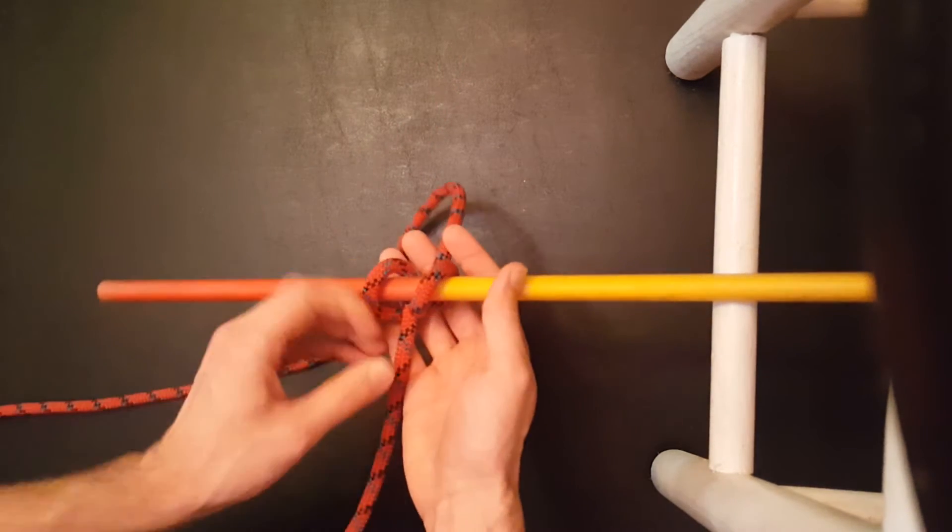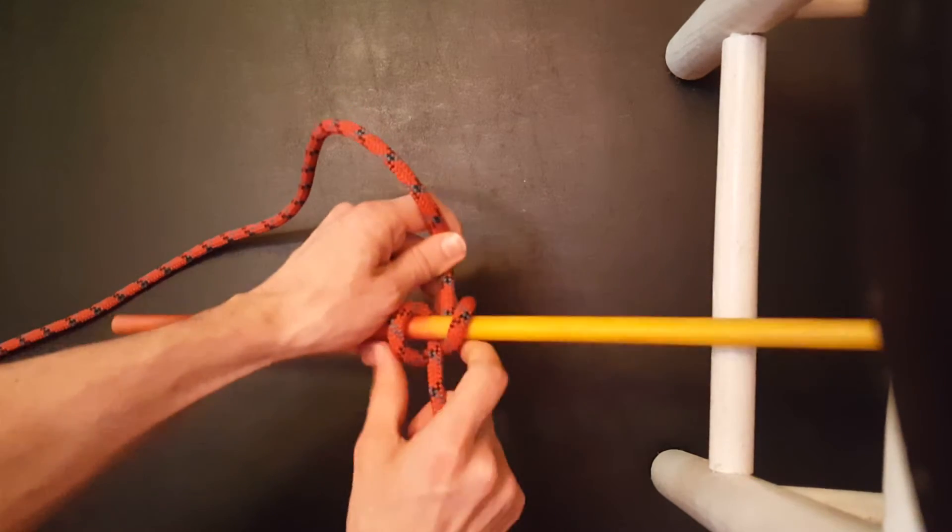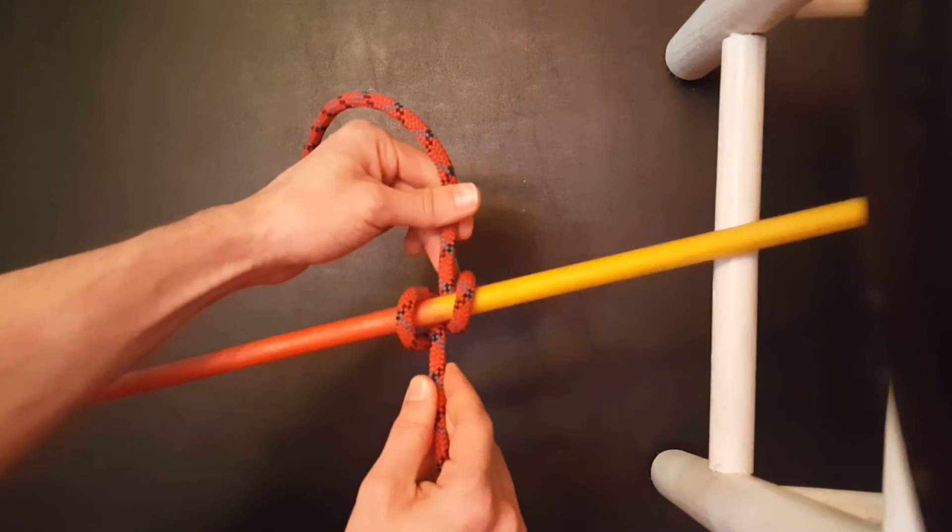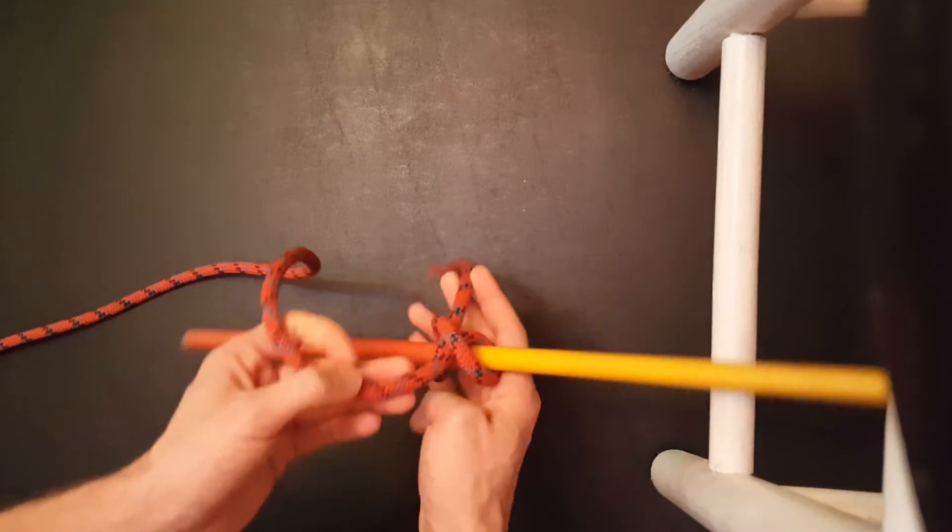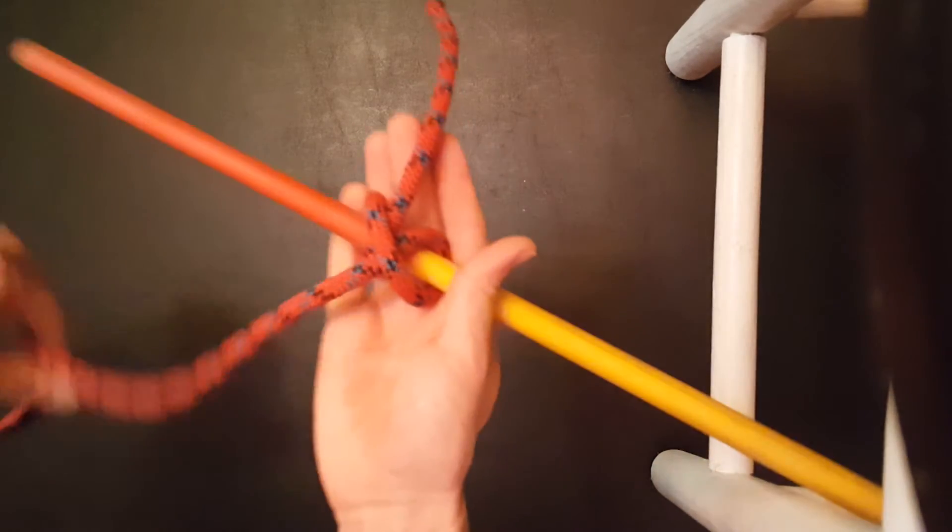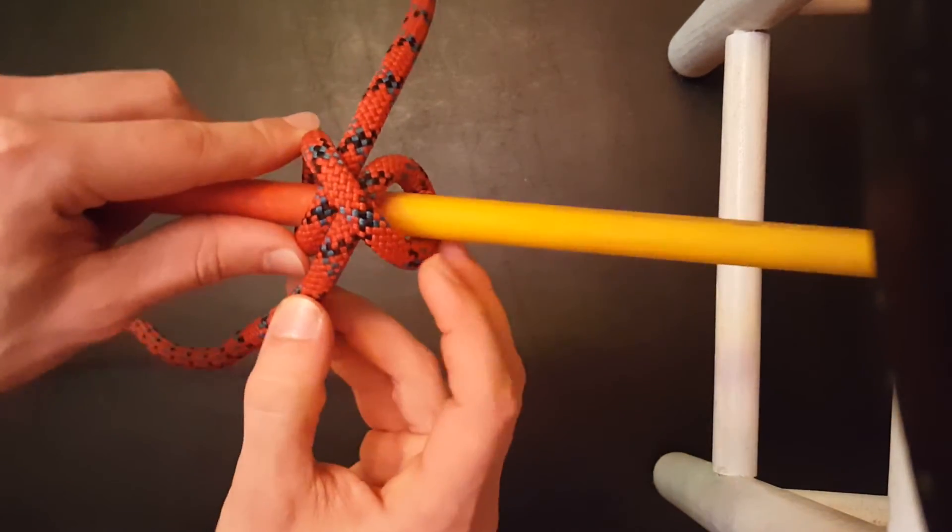Here's what it looks like from the other side. Kind of hard to see all the way around. So that is your clove hitch.